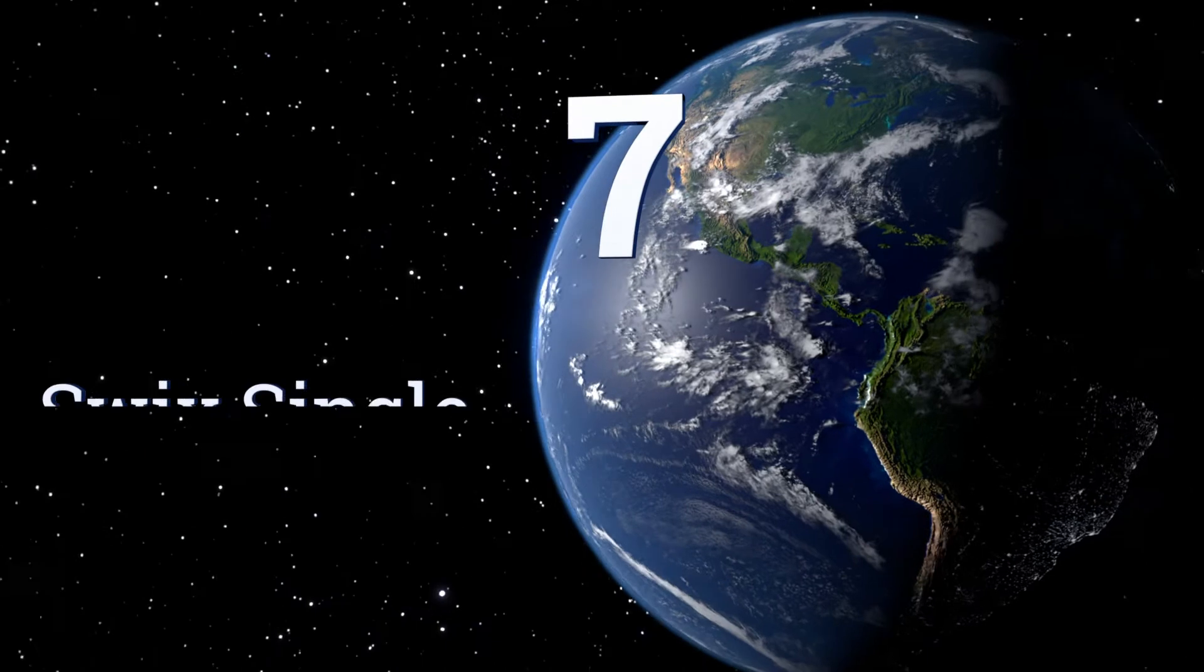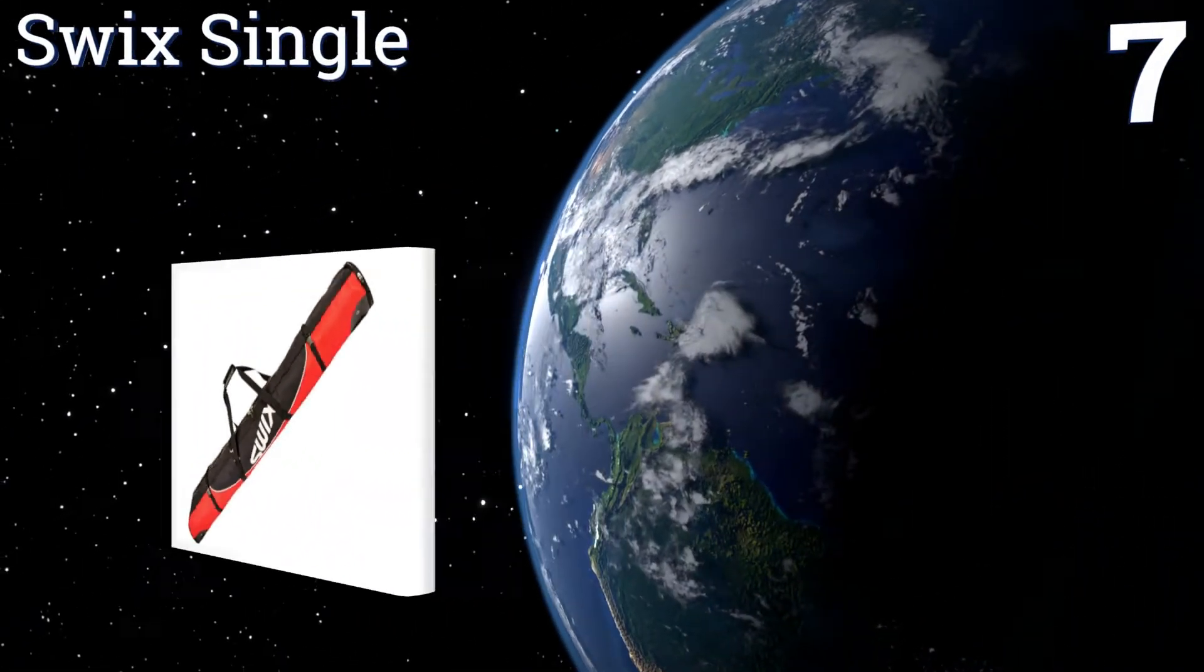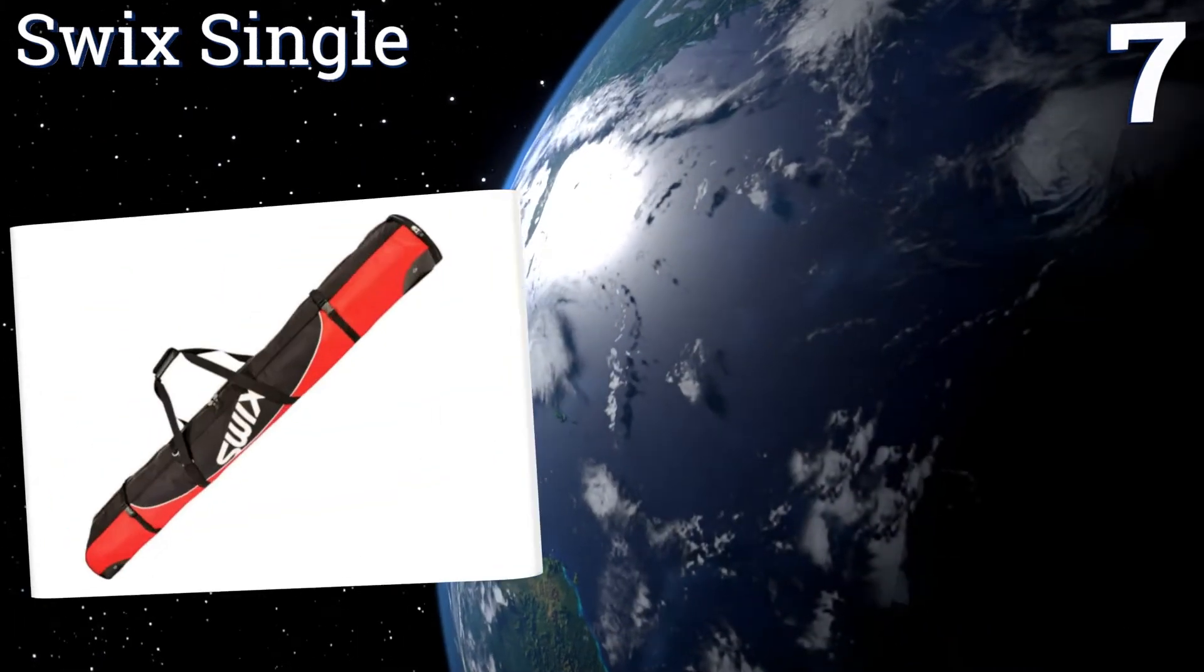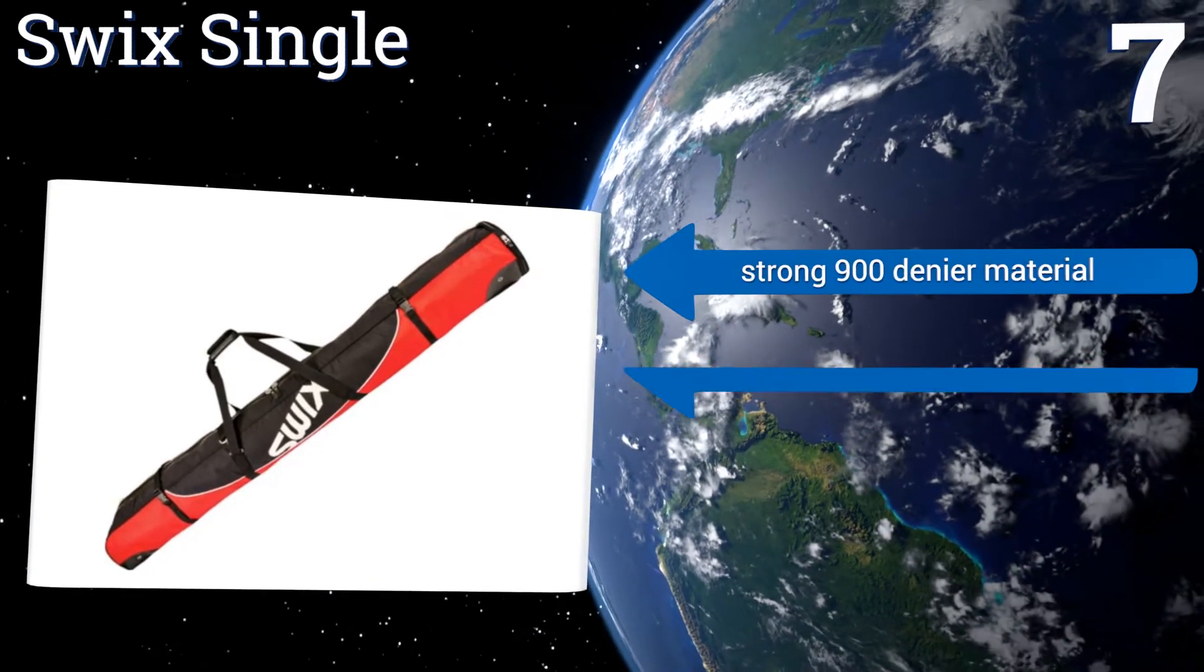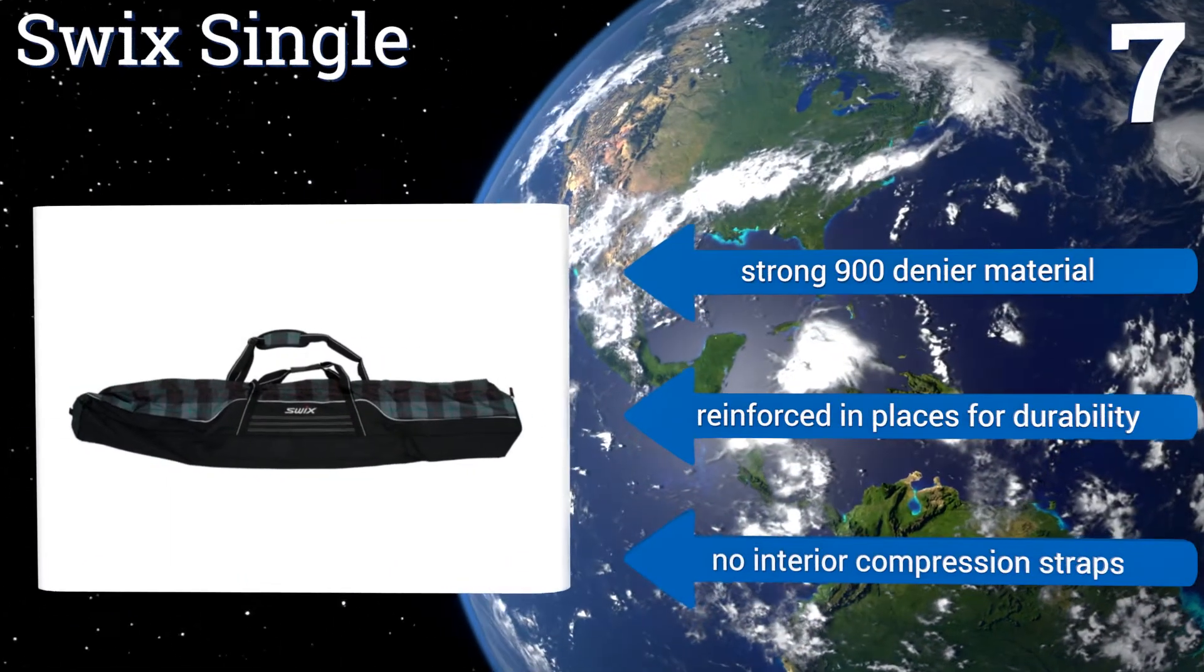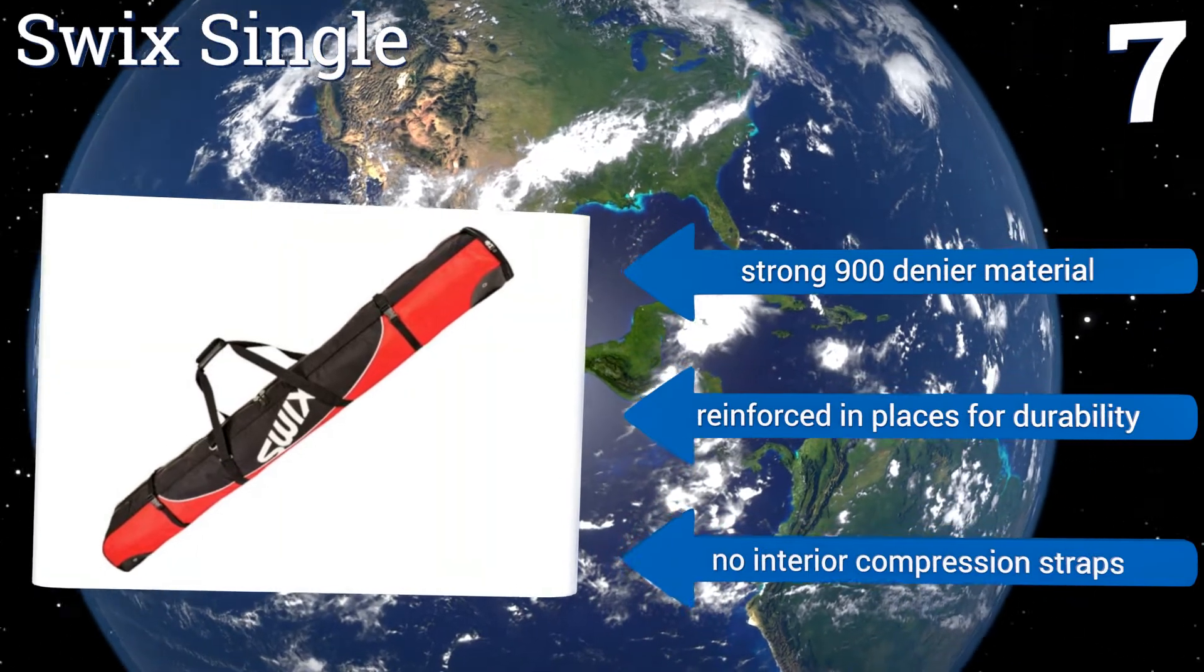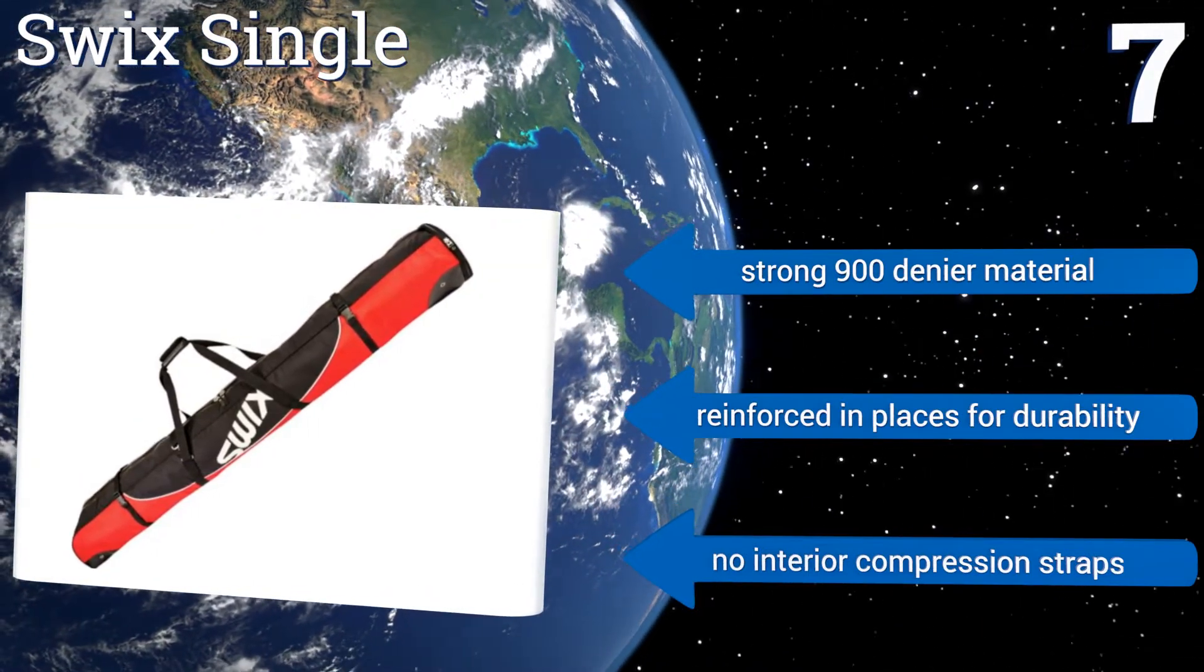Coming in at number seven on our list, the Swick Single is built for accommodating wider alpine style skis, but it also works great for Nordic and parabolic skis. That versatility is thanks in part to its patented length adjustable compartment, which can move to accommodate anything from 190 to 210 centimeters. It's made from a strong 900 denier material that's reinforced in places for durability, but there are no interior compression straps.